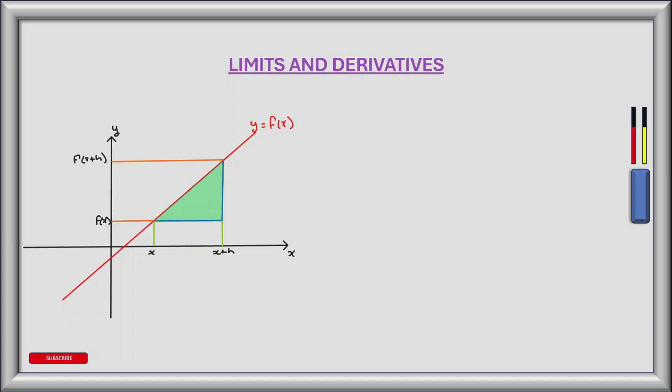When we looked at finding the gradient or slope of a linear function f(x) in an earlier video, we took two points on the line and calculated the rise divided by the run, or the change in y with respect to x. This gave us the gradient or slope of the function. Looking at our function y = f(x), I've marked in two points on the x-axis: x and x plus h, where h is some distance from x. The equivalent points on the y-axis are f(x) and f(x+h). So the change in y with respect to the change in x is f(x+h) minus f(x), divided by x plus h minus x.